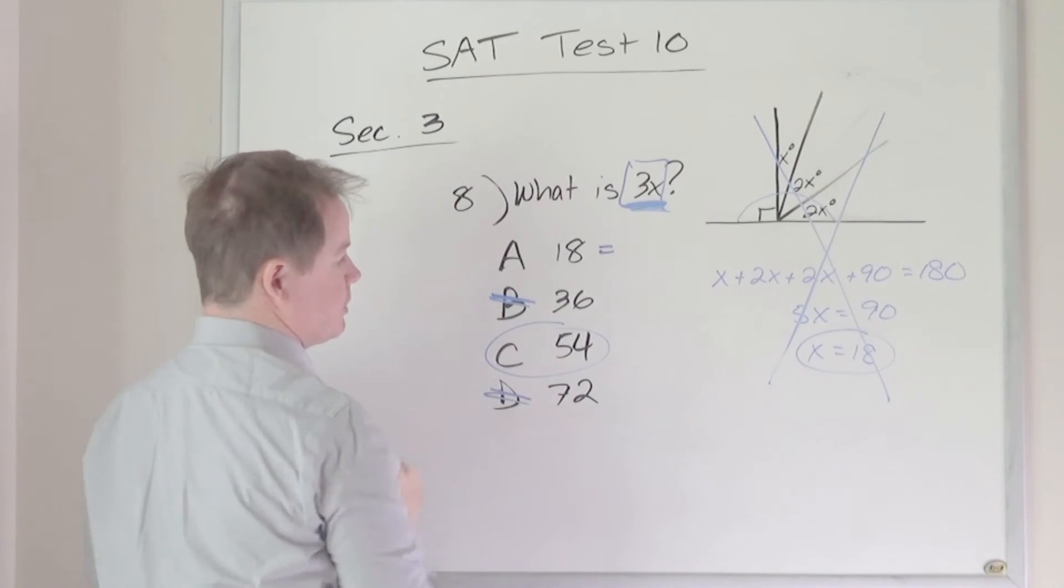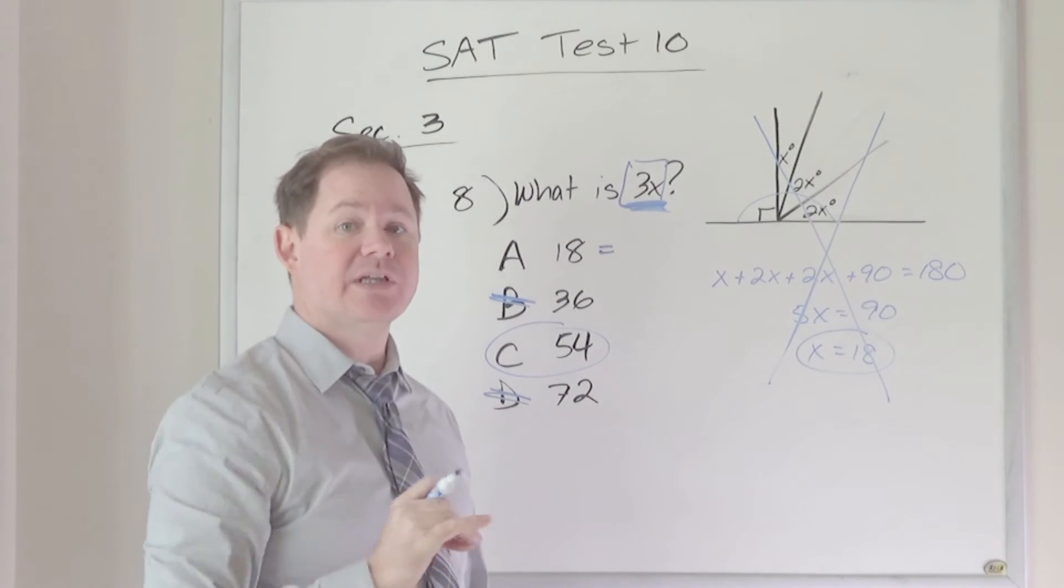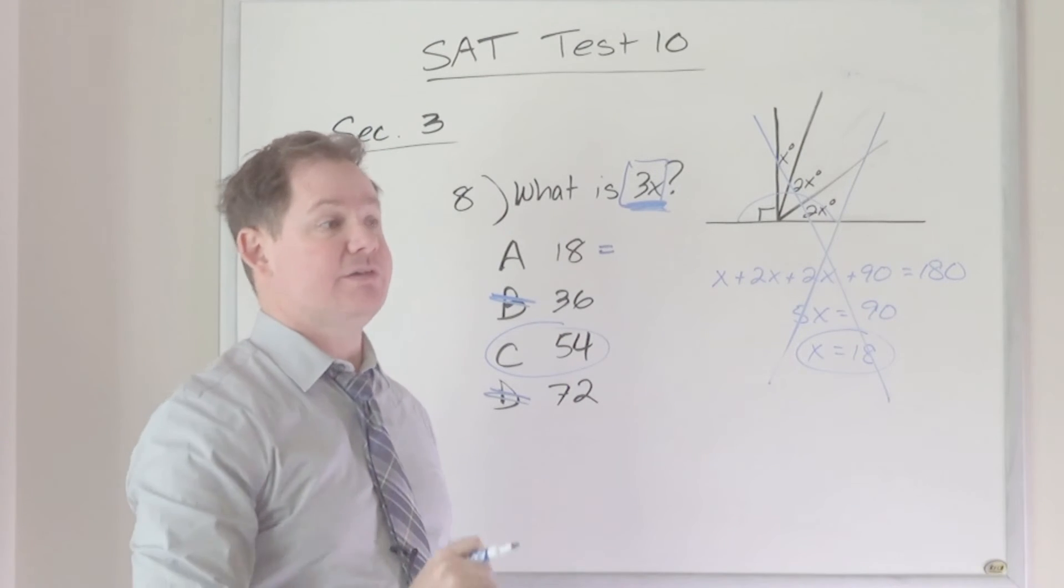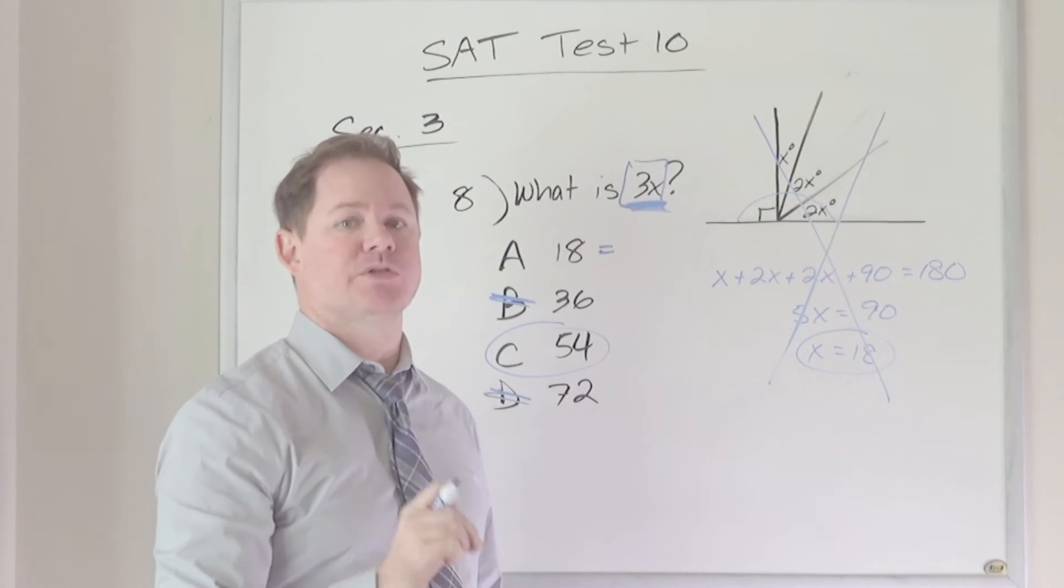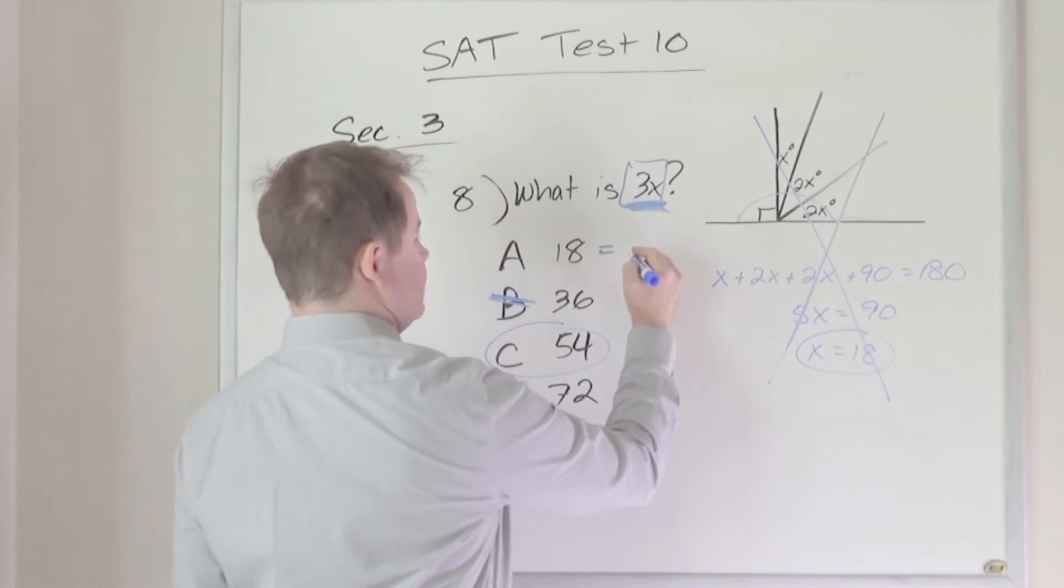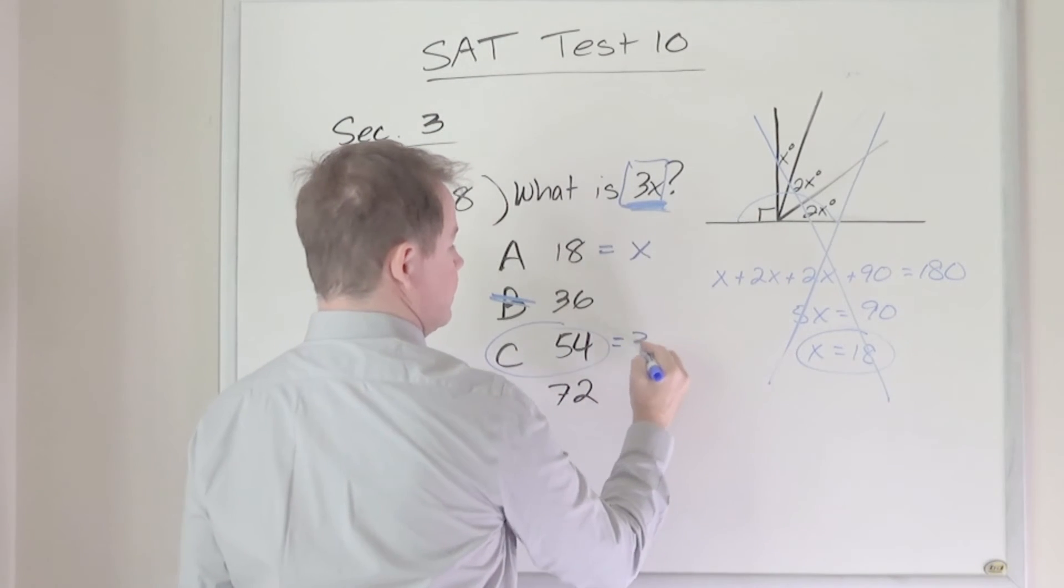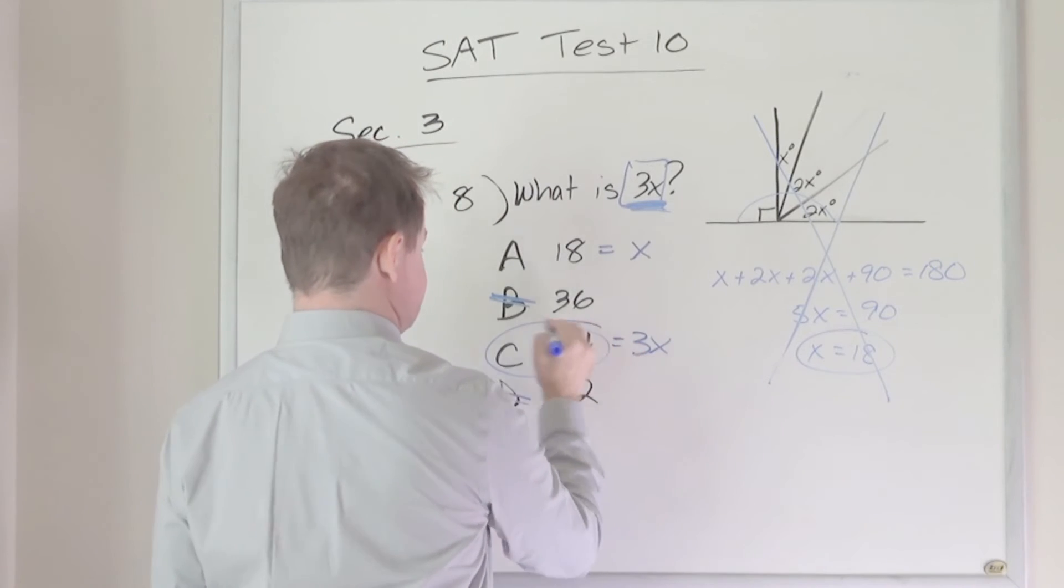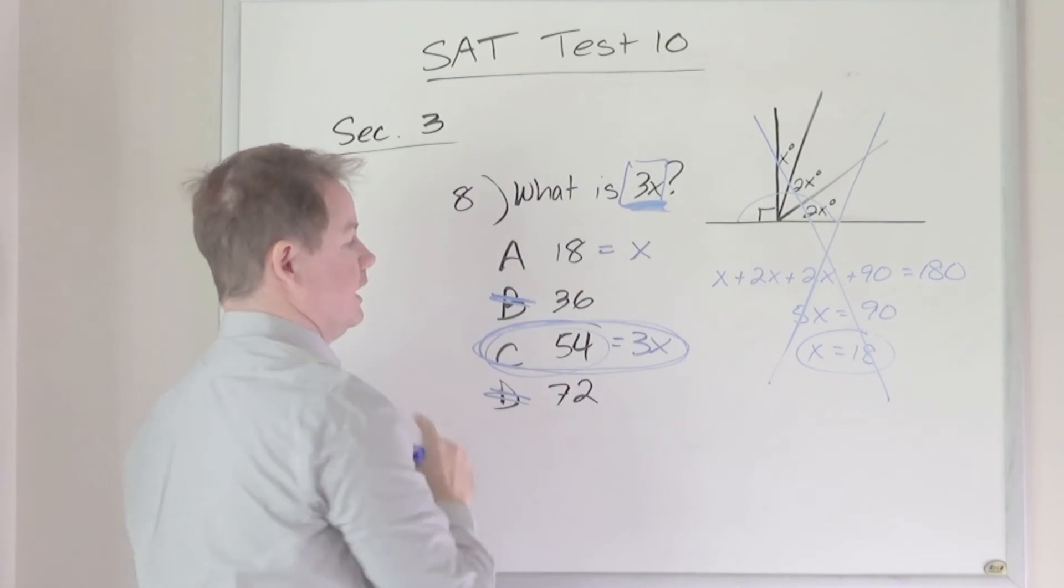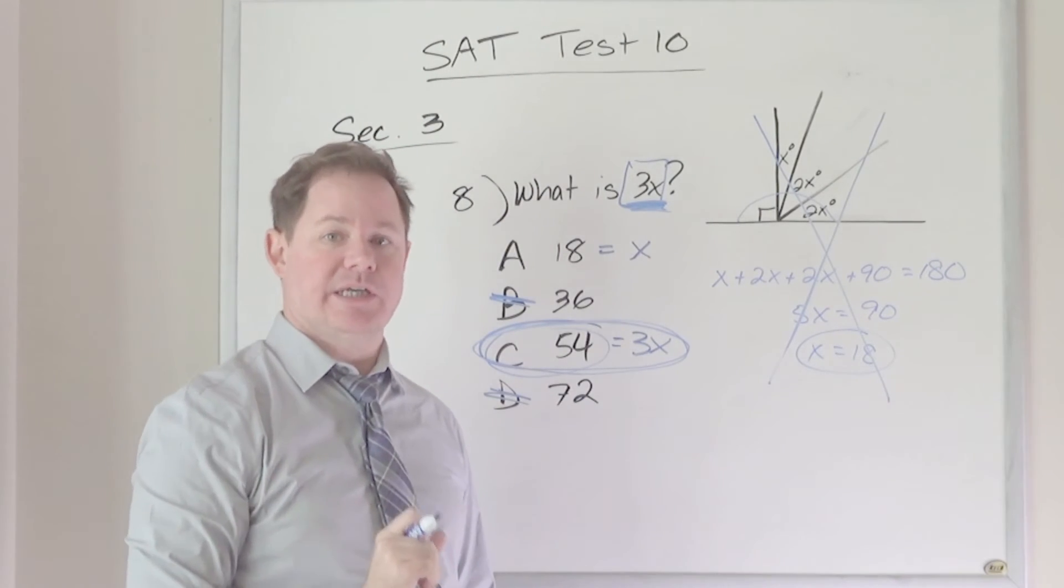And the only two answer choices where we see that relationship, we don't see it in B and D, but we do see that relationship between A and C. 18 times 3 is 54, which lets us know without calculating anything that there is a very great likelihood, almost a certainty, that 18 is your actual value of x. And then 54, in turn, would be your value of 3x, which is what the question is asking. And that's what's going to be our correct answer choice.